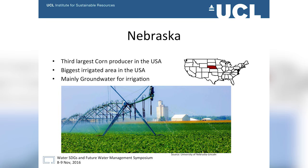Just a little overview of Nebraska. It is the third largest corn producer in the USA — you can see it in the map in the red area. It has the biggest irrigated area in the USA, and the water for irrigation mainly comes from groundwater.